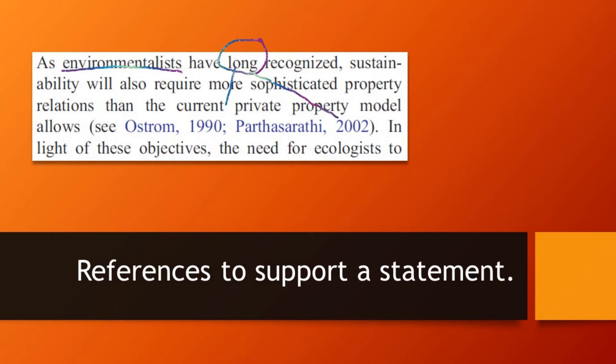Another way to deal with references is to use them to support general statements that would otherwise be difficult to support. For example, she says that 'as environmentalists have long recognized, sustainability will also require more sophisticated property relations than the current private property model allows' — citing Ostrom and Barthsarathic, for example. Without these references, this would be an unsupported statement that should be kicked out of the essay. But with the references, you can keep it in and show there are people who have written about these types of property models.